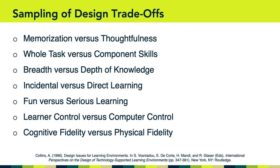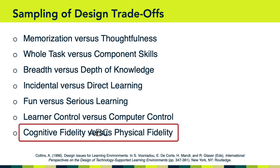Collins described various design trade-offs. One has to do with memorization versus thoughtfulness — quick, surface-level learning versus slower, deeper-level learning. Another is whether a visual representation is focused on a whole task or some component skills of that task. Other trade-offs include breadth of knowledge versus depth of knowledge, incidental versus direct learning, fun versus serious learning, learner control versus technology control, and cognitive fidelity versus physical fidelity. Not all of these relate directly to visual design, but many do. I want to emphasize that last one — cognitive fidelity versus physical fidelity — and I'll do that by showing you an example.